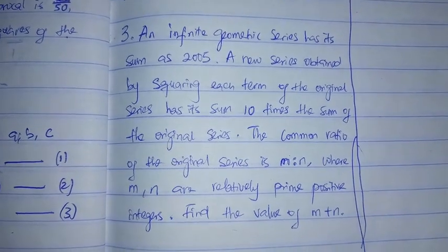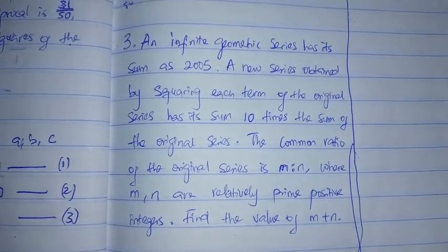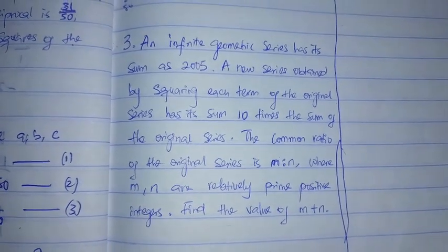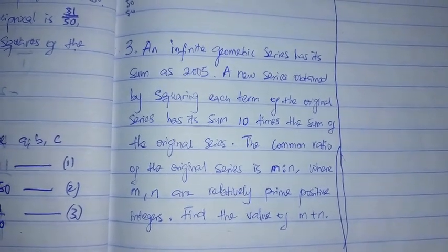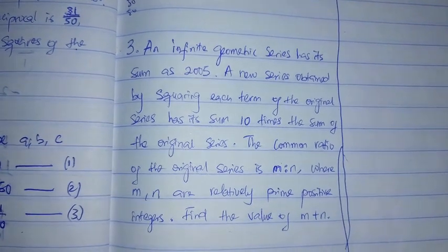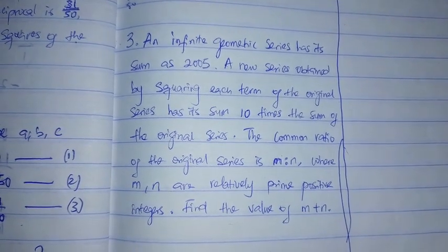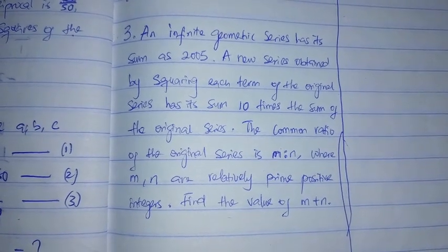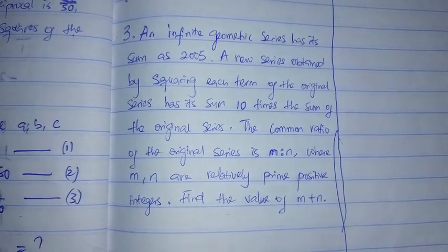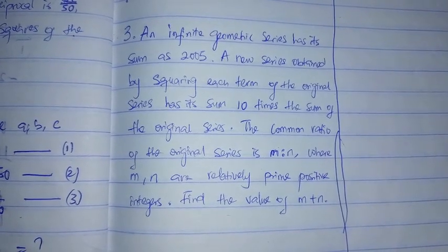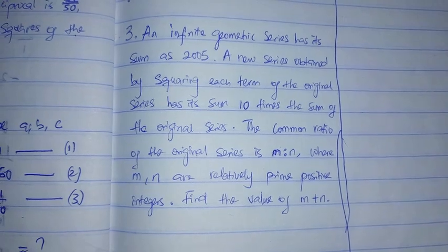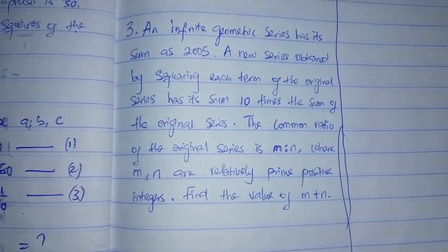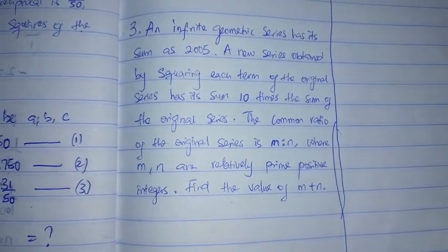Hello, welcome back to the King's Tierra Class, and welcome to part B, question 3 of the Olympiad Pass question. This question says: an infinite geometric series has its sum as 2005. A new series obtained by squaring each term of the original series has its sum 10 times the sum of the original series. The common ratio of the original series is m/n, where m and n are relatively prime positive integers. Find the value of m plus n.